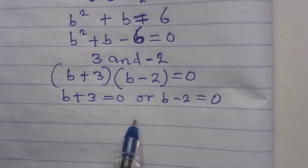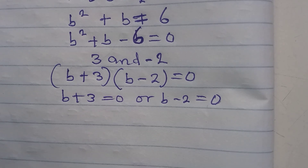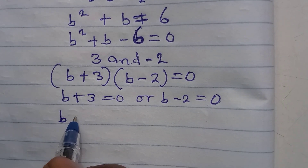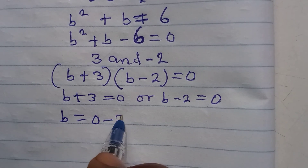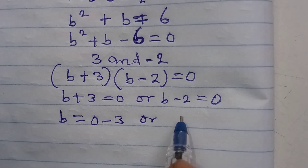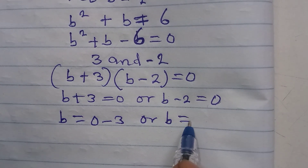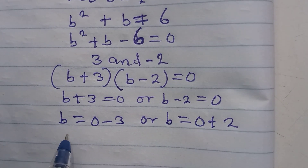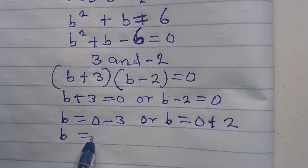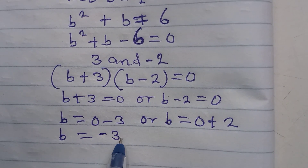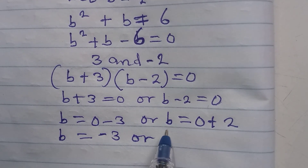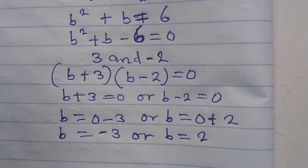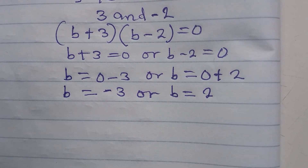Solving each case: from b plus 3 equals 0, we get b equals minus 3. From b minus 2 equals 0, we get b equals 2. But remember, b is not the final answer — we defined b as 2 to the power of x.